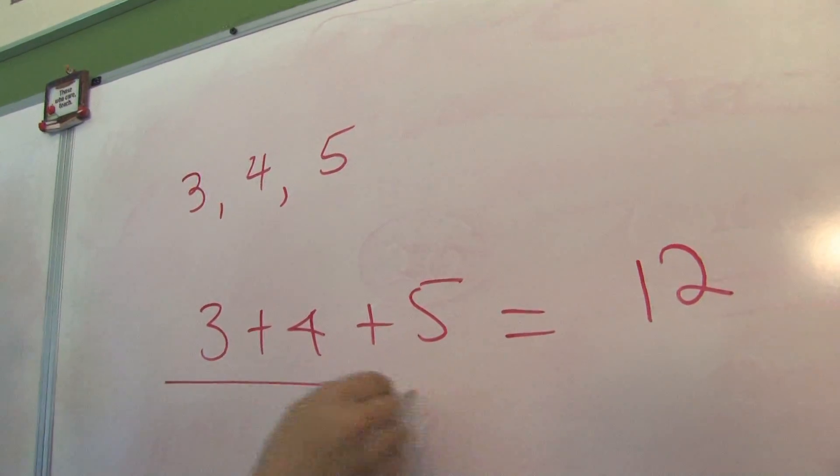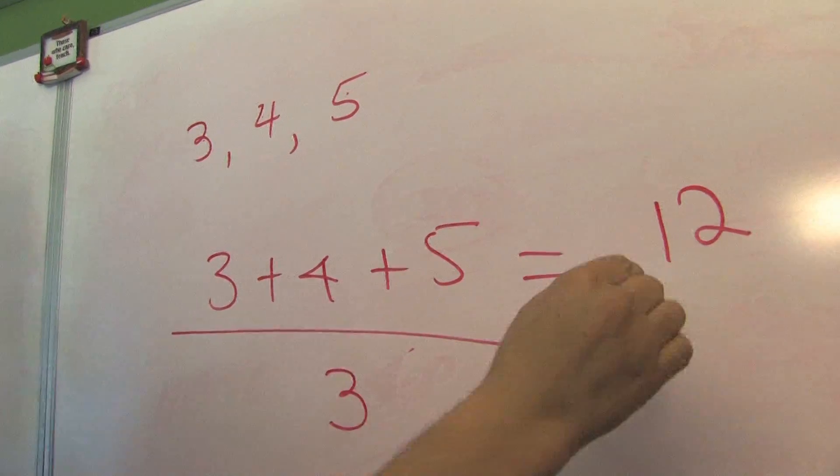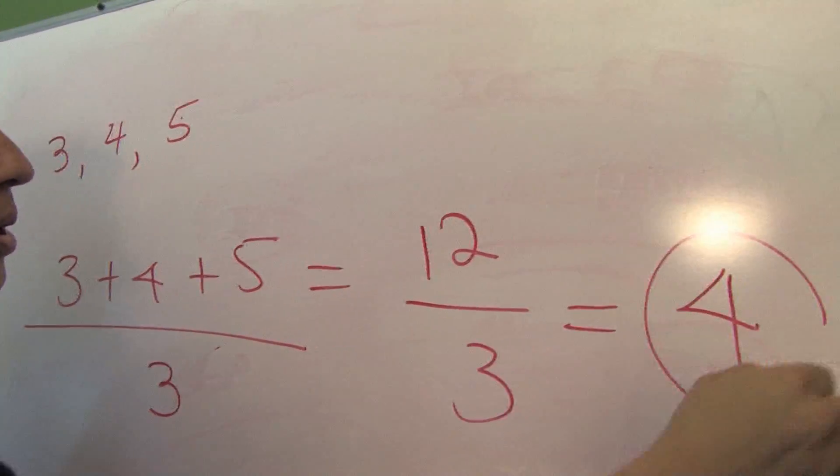Then divide by how many numbers you have? 1, 2, 3. So you have 3 numbers. So divide by 3. So the average of those 4 numbers is 4.